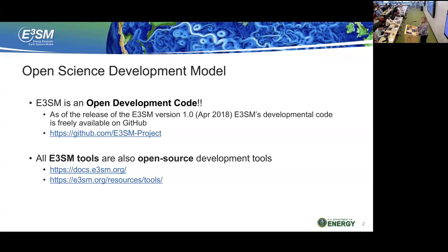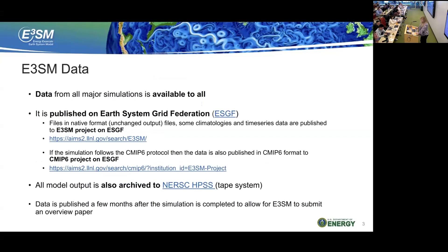We have a centralized documentation space — someone was asking about documentation. We are already working on it, and the best place to check is docs.e3sm.org, which has a lot of documentation that we pulled together for this tutorial, and we will continue expanding it. You also have resources on e3sm.org, our main website. For data, we are publishing all the data from major simulations to the Earth System Grid Federation, ESGF. As the default, all files are in their native format — unchanged output from the model. Some climatologies and time series are also published to the ESGF E3SM project.